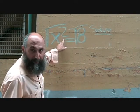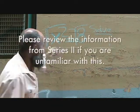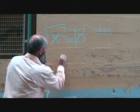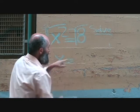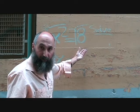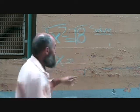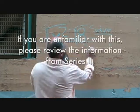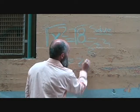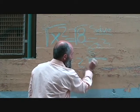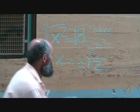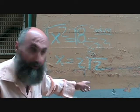Now, the square root of x squared — from series 2 you should know — is just x. So this becomes x is equal to the square root of 8. If you're going to reduce this to its lowest terms, you break it up into its prime tree. So the square root of 8 becomes 2 square root of 2. The answer is x is equal to 2 square root 2.